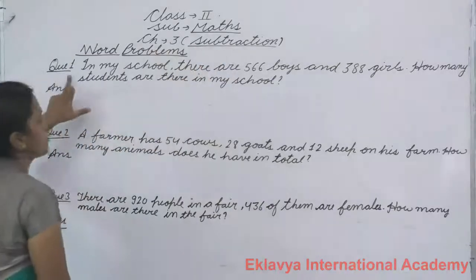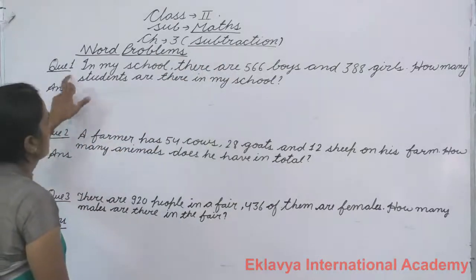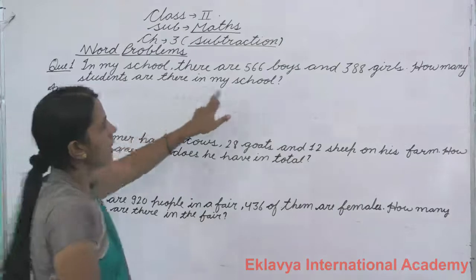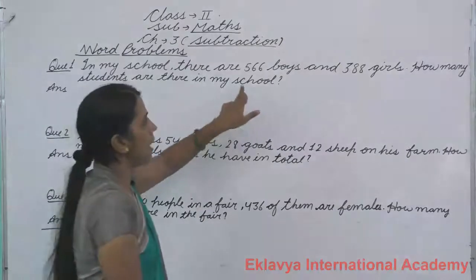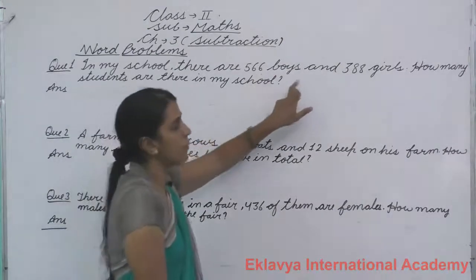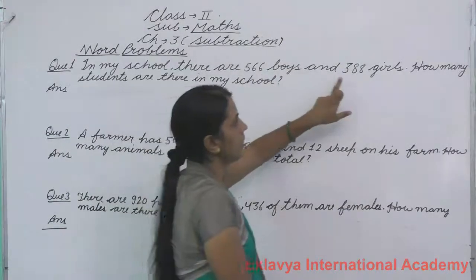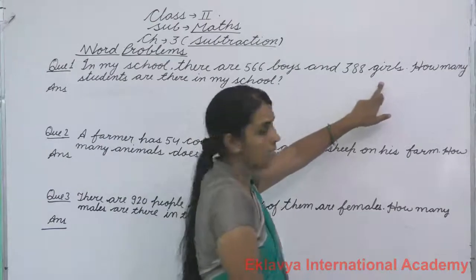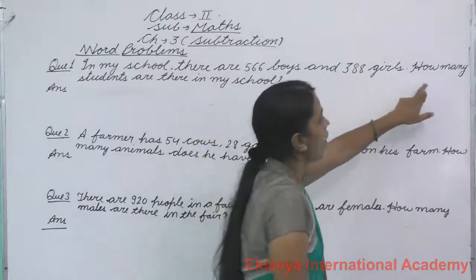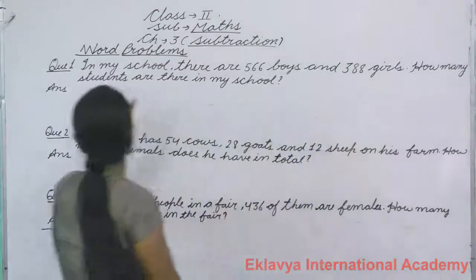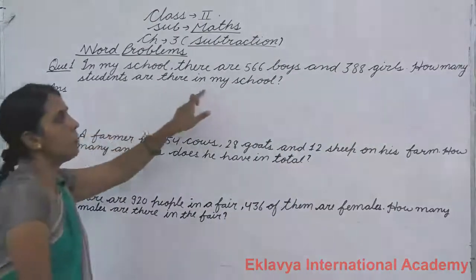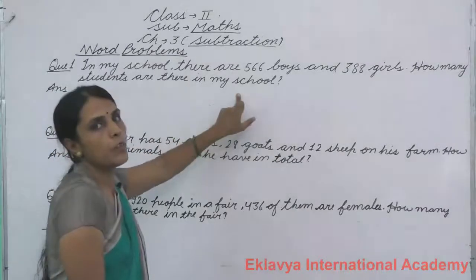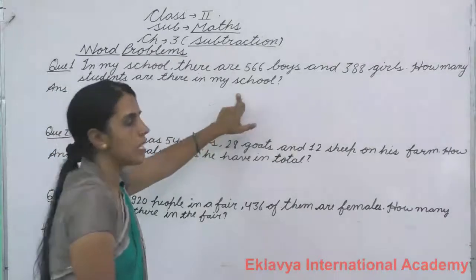We will read the first question. In my school there are 566 boys and 388 girls. How many students are there in my school? First of all we will make a statement.